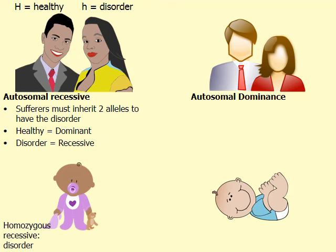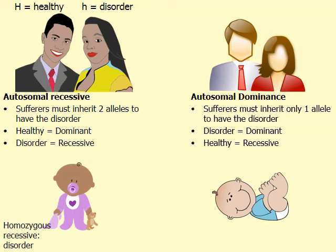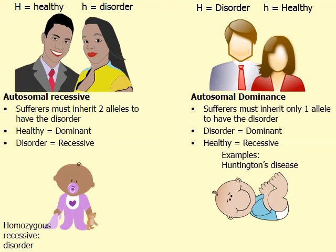How does this differ from autosomal dominance? Sufferers of autosomal dominant disorders only have to inherit one allele in order to have the disorder. This makes the disorder the dominant trait, and sadly, being healthy is recessive. Notice how the key has changed: the disorder is represented by the dominant capital H, and being healthy is represented by the lowercase recessive h. Examples of autosomal dominant disorders include Huntington's disease (HD) and familial hypercholesterolemia (FH).